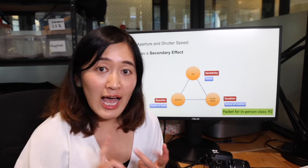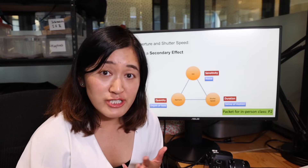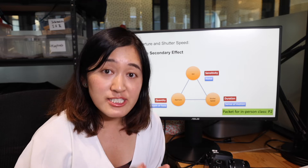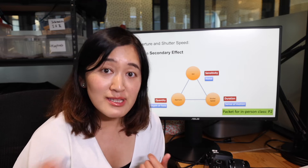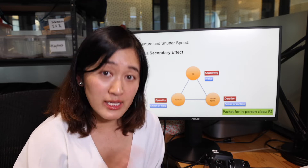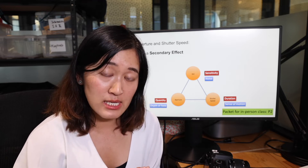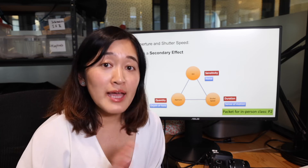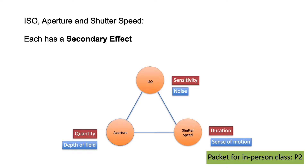ISO, aperture, and shutter speed determine how much light can come into the camera, but in different ways. At the same time, there's a secondary effect every time when you change ISO, aperture, and shutter speed.